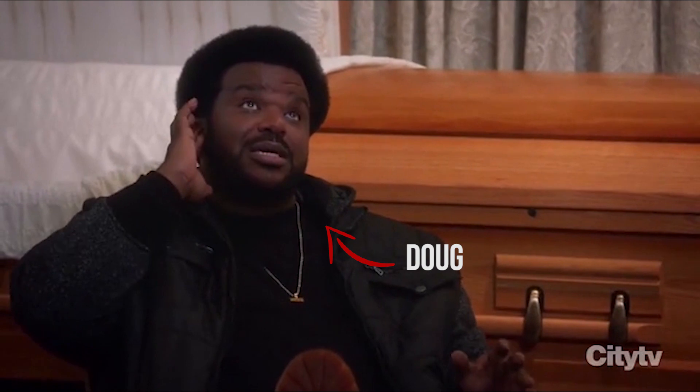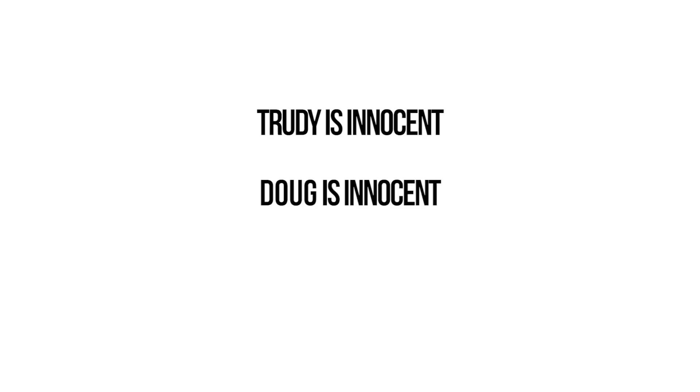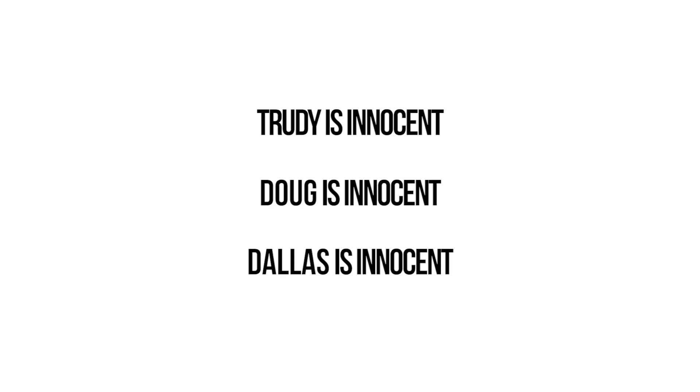The first case involves a car thief stealing cars all over Brooklyn. We have three suspects: Trudy, Doug, and Dallas. We want to find out whether Trudy is innocent, whether Doug is innocent, and whether Dallas is innocent. These statements are atomic propositions which we represent by propositional letters t, g, and d.